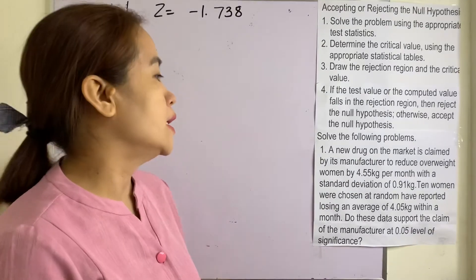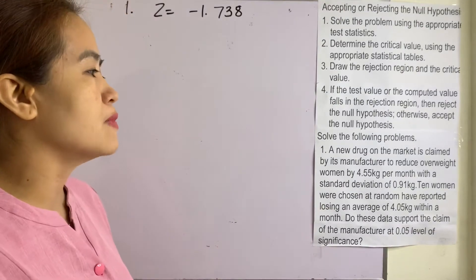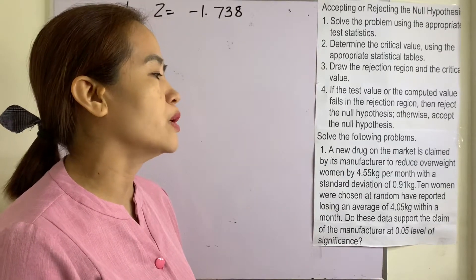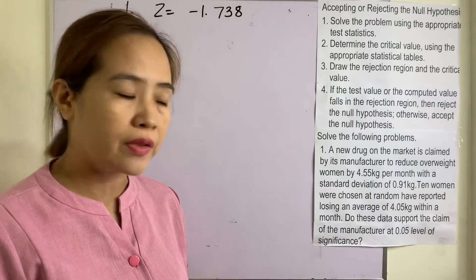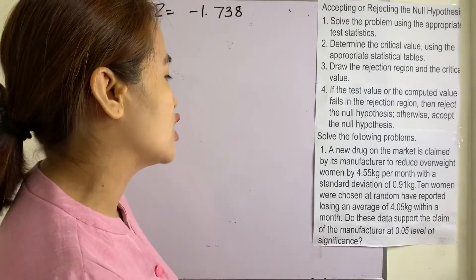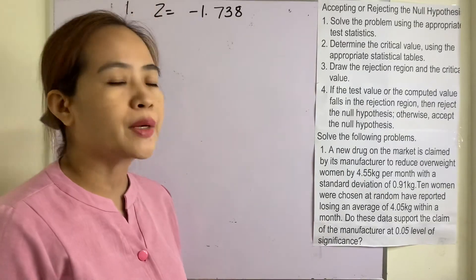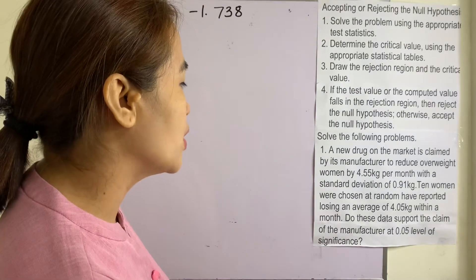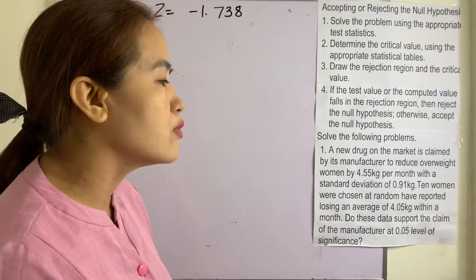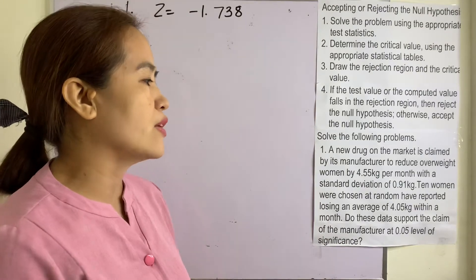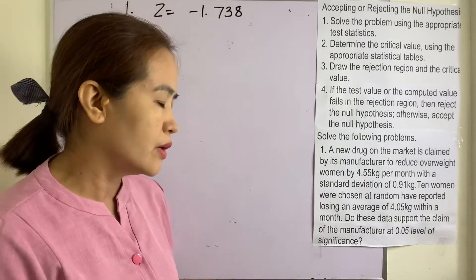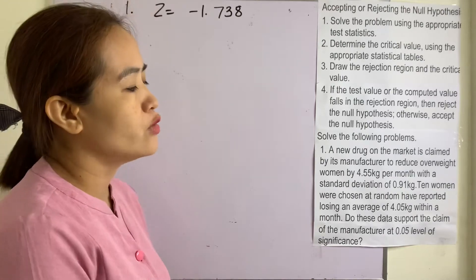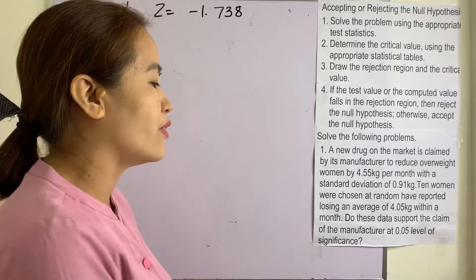Example one: A new drug on the market is claimed by its manufacturer to reduce overweight women by 4.55 kilograms per month with a standard deviation of 0.91 kilograms. Ten women chosen at random reported losing an average of 4.05 kilograms within a month. Do this data support the claim of the manufacturer at 0.05 level of significance?